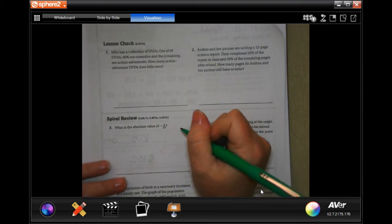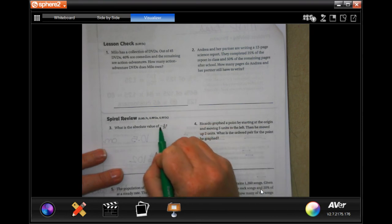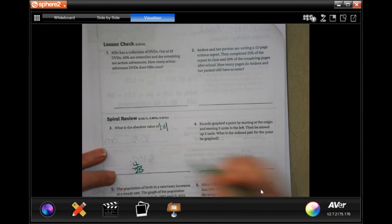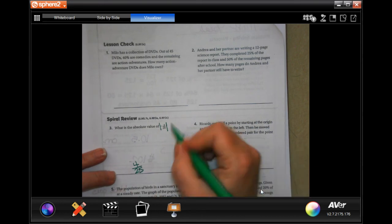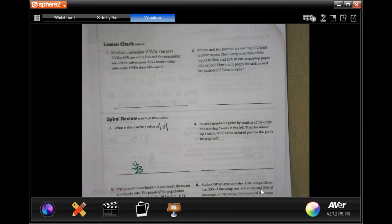Now, we are going to go and do the spiral review, and this says, what is the absolute value of negative 4 over 25? Well, boom, boom, 4 over 25. Absolute value is just a number without a sign. Super easy. Don't make it harder than it's got to be.